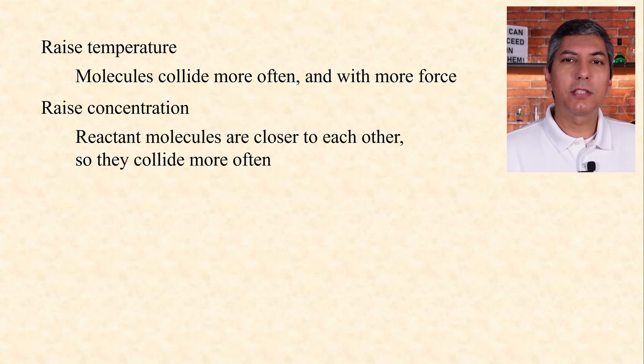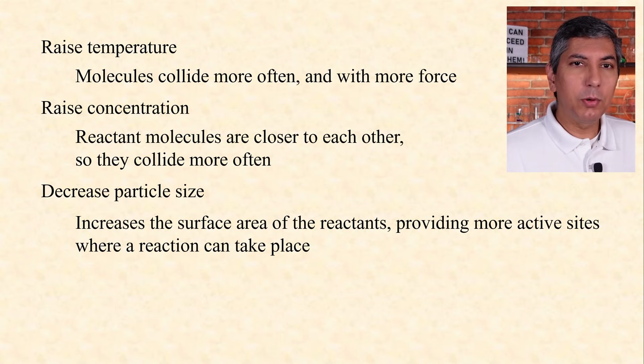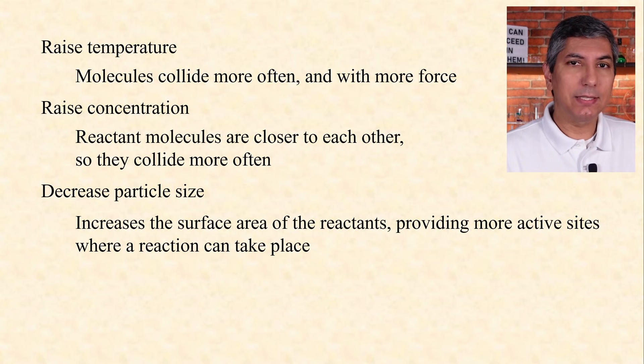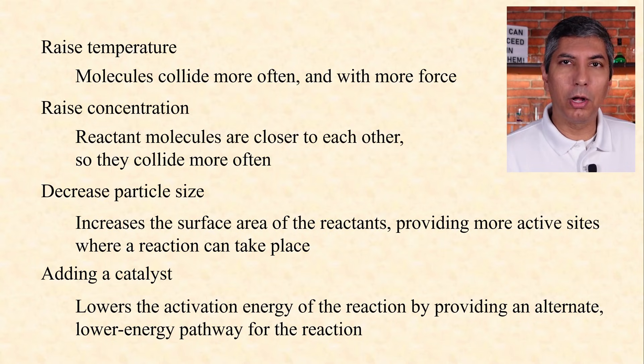When we decrease the particle size of the reactants, we increase the surface area of the reactants, which provides more spots — or more active sites, as we say in chemistry — where a reaction can take place. It's also effective to add a catalyst. A catalyst is a substance that speeds up a chemical reaction without being used up in the process. Catalysts work by lowering the activation energy of a reaction by providing an alternate, lower energy pathway for the reaction. We'll take a look at that a bit later.